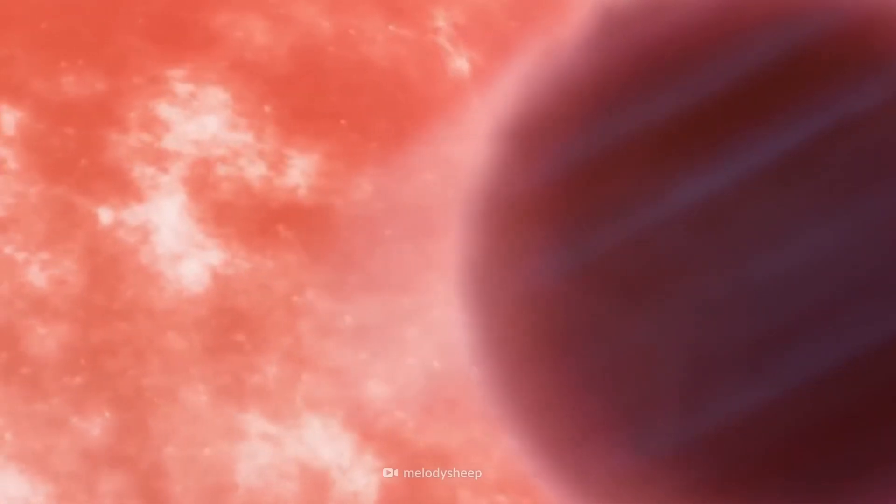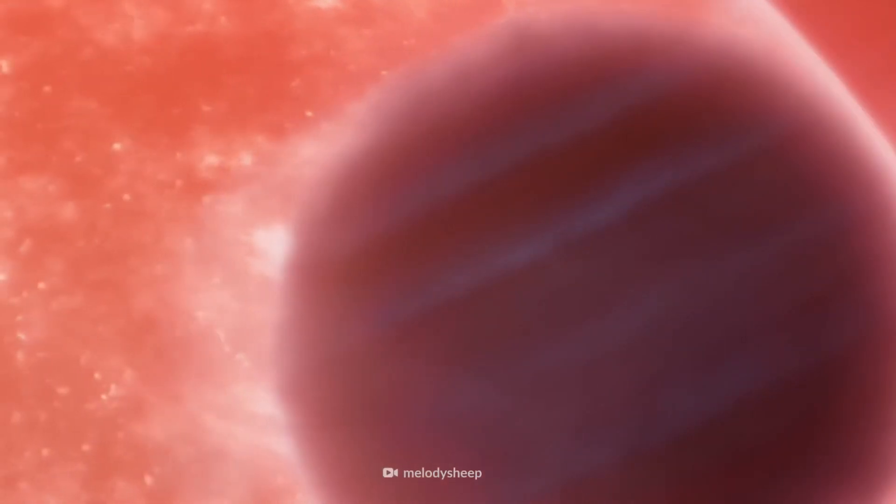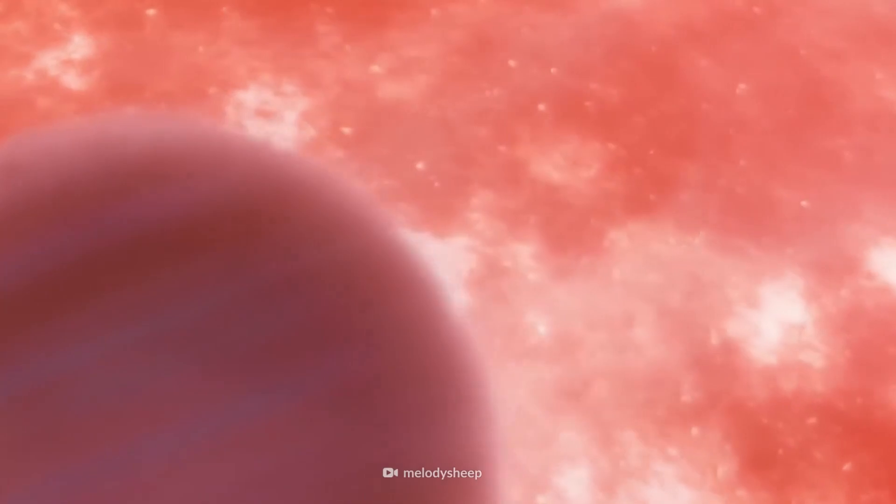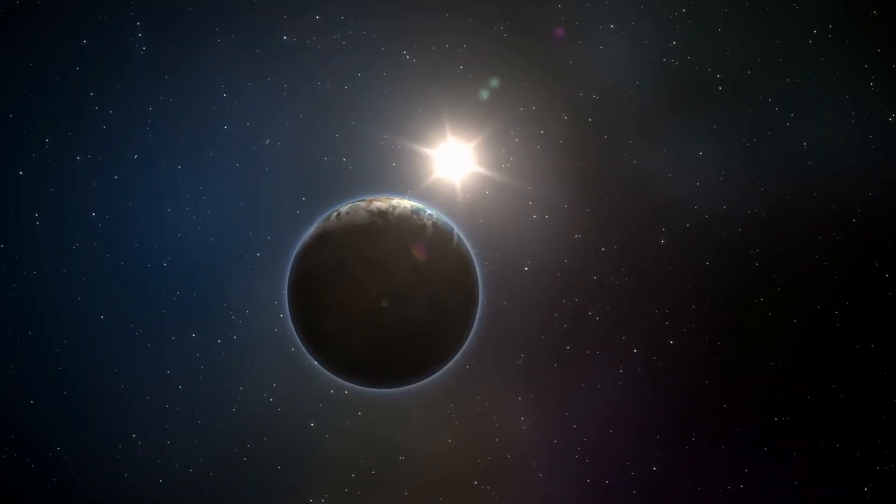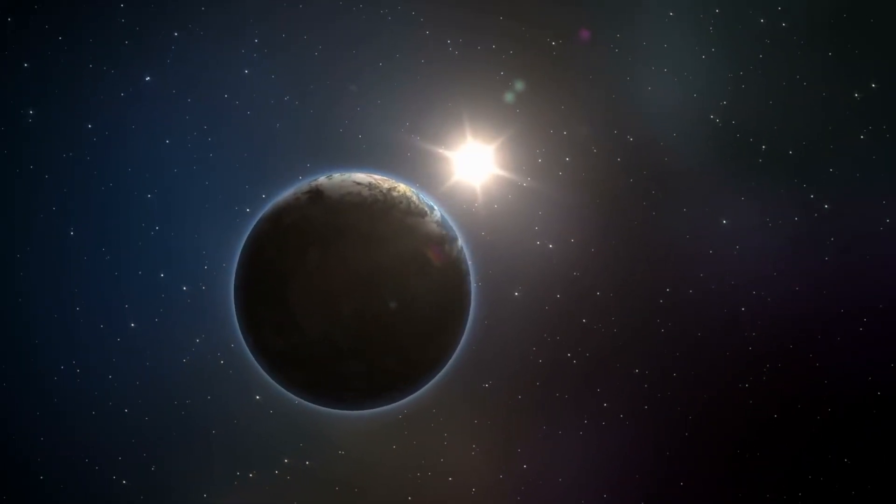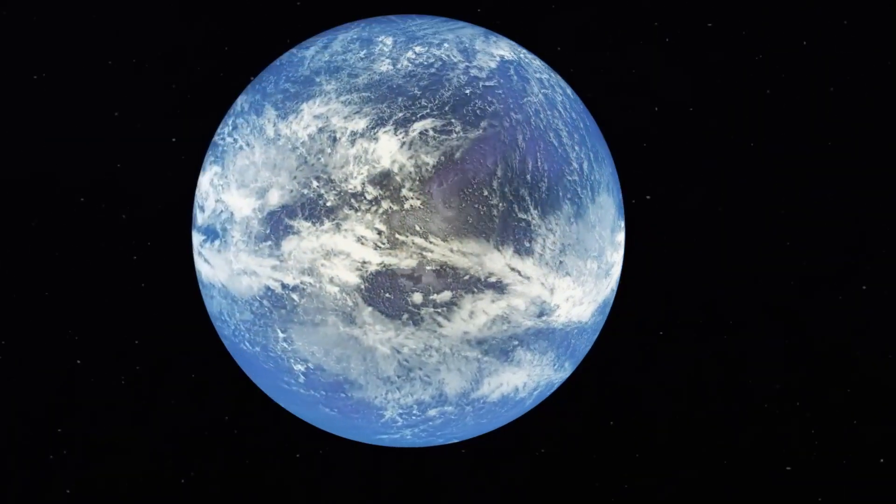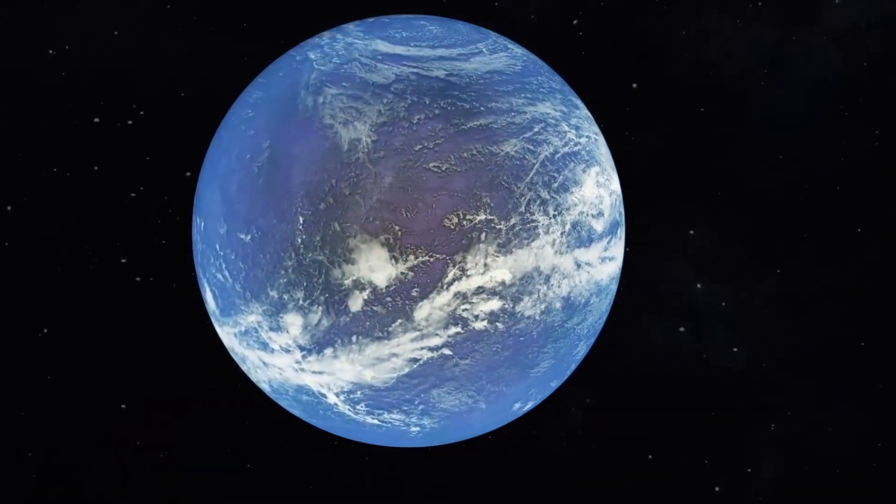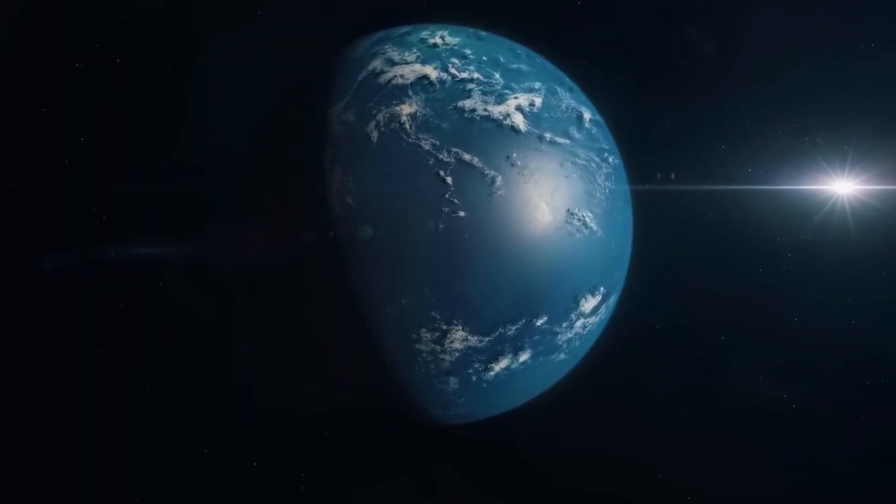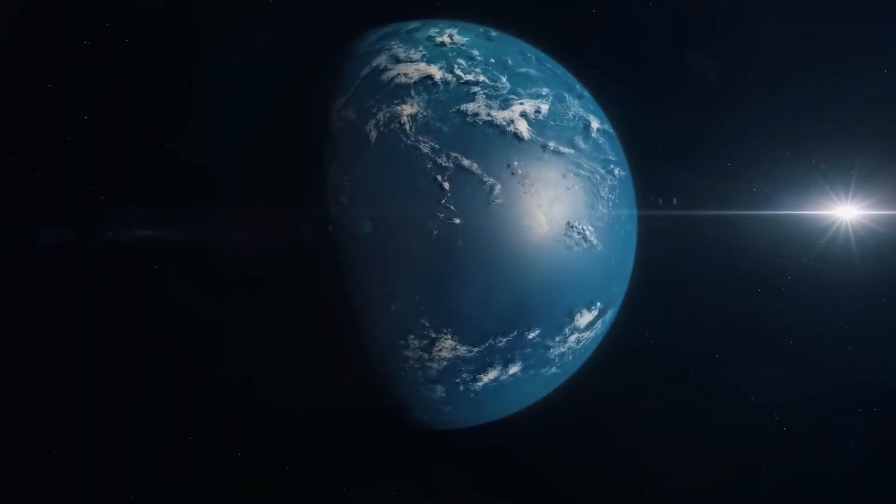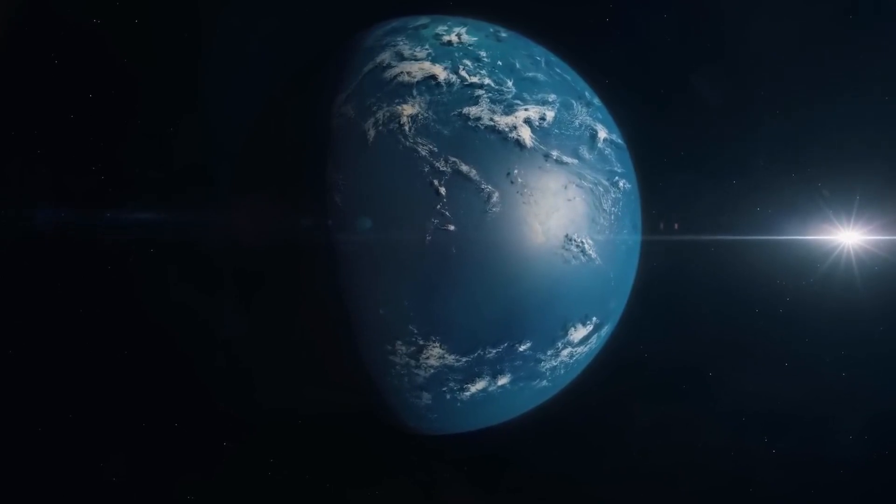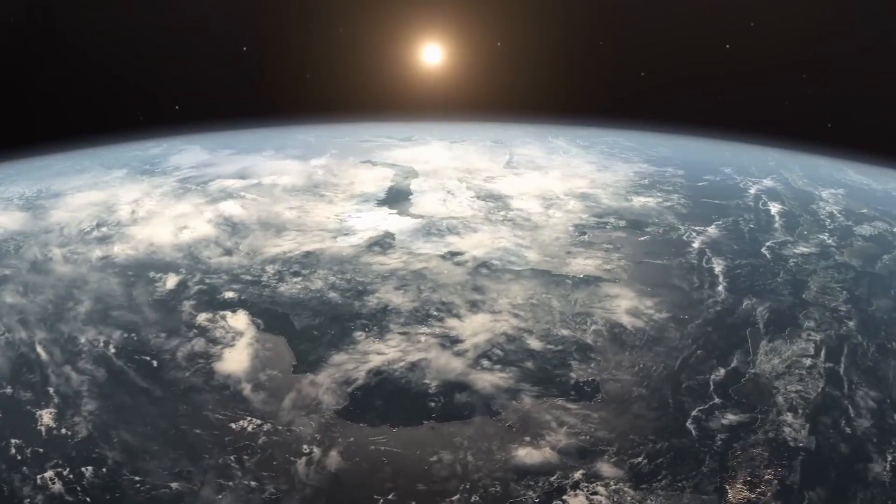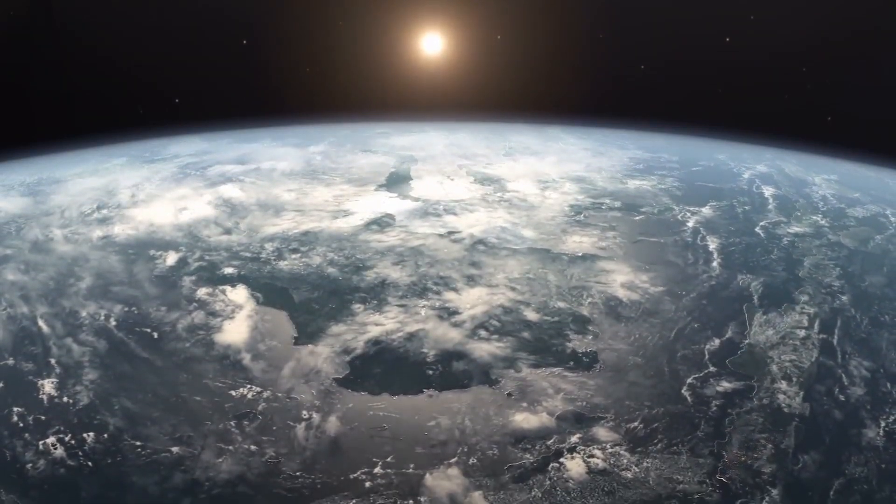Nestled within the habitable zone of its diminutive red dwarf star, merely 15% of the size of our Sun, Speculoos 2c orbits at an exceptionally close distance. This intimate orbital path around its star suggests a potential scenario of tidal locking, a phenomenon where one face of the planet remains perpetually facing the star while the other dwells in eternal darkness. This unique circumstance results in a drastic division between unending daylight and endless night, setting the stage for a potential zone of equilibrium called the Terminator Zone.